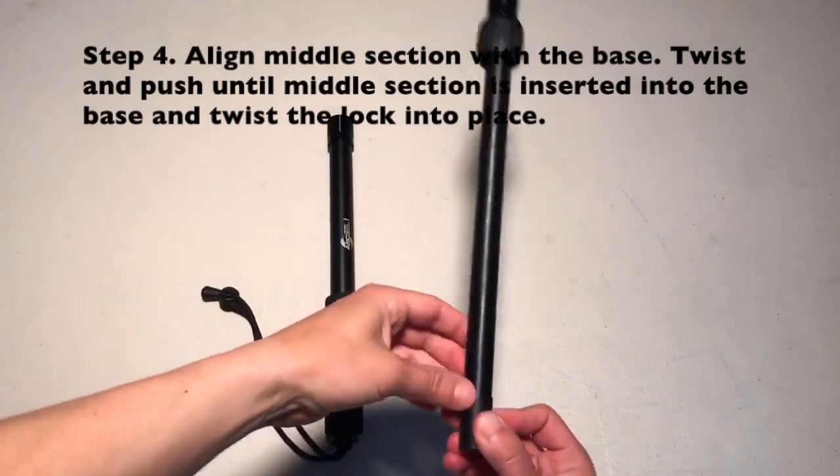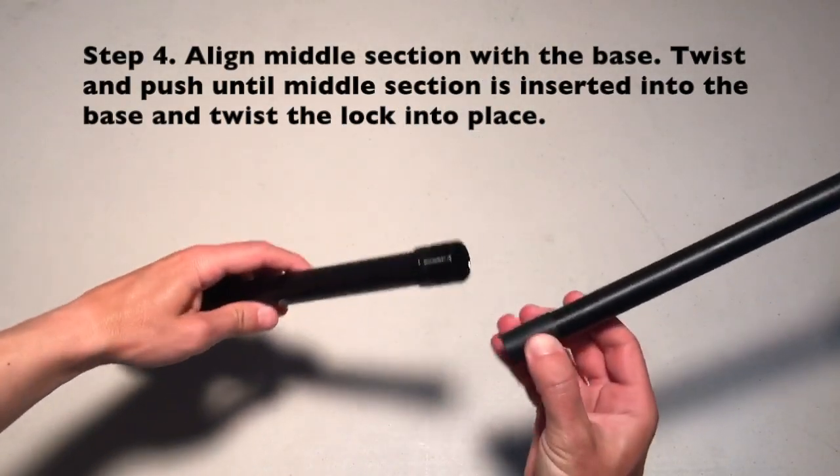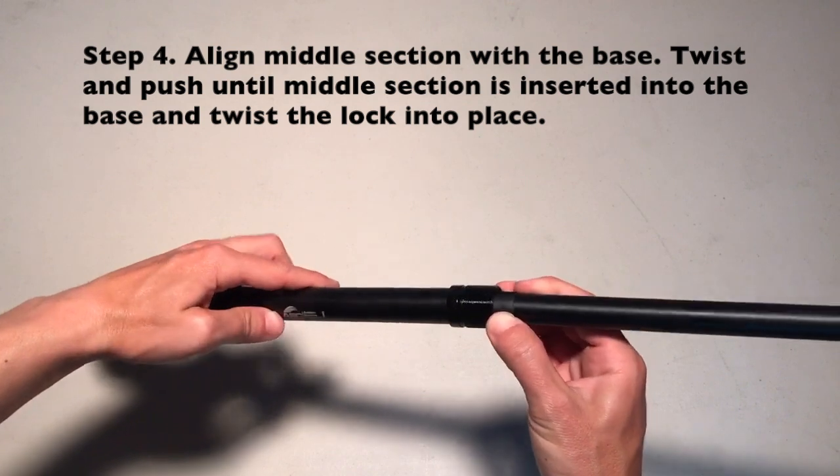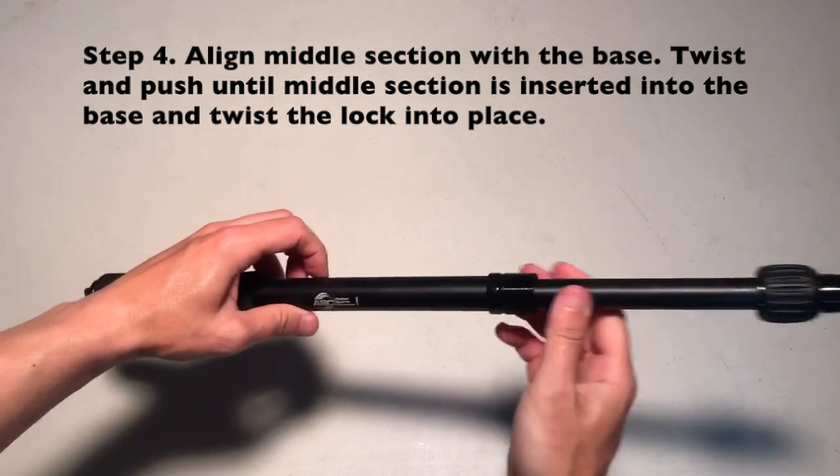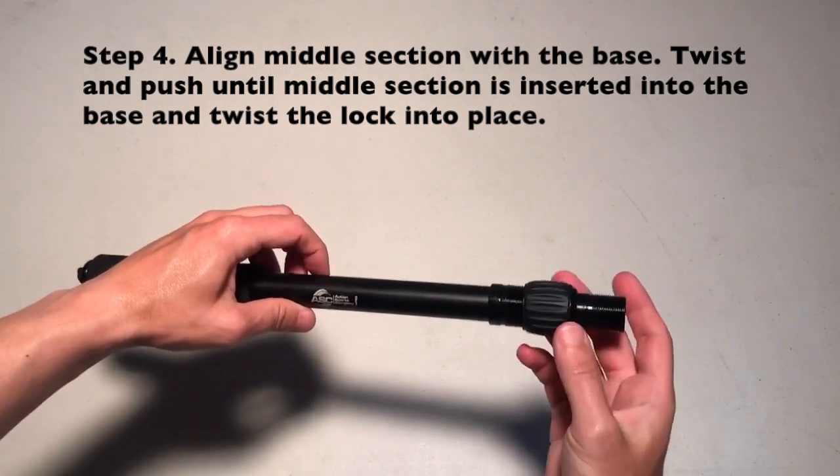Step four: align middle section with the base. Twist and push until the middle section is inserted into the base and twist the locks into place.